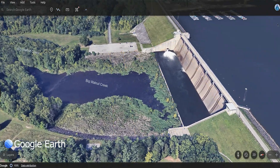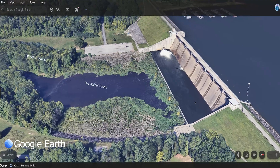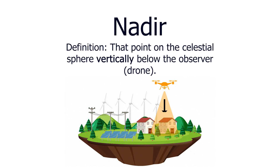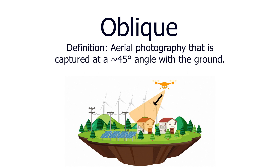Depending on what you're looking at, these photos are captured in what is called a nadir or oblique position. Nadir means that the aerial camera is positioned in a top-down position, or zero-degree angle, looking straight down at the ground. Higher angles are referred to as oblique positions.